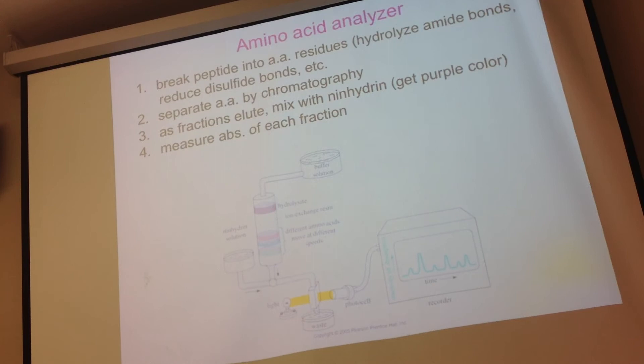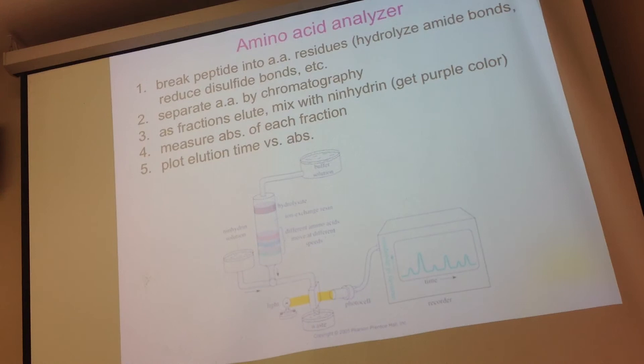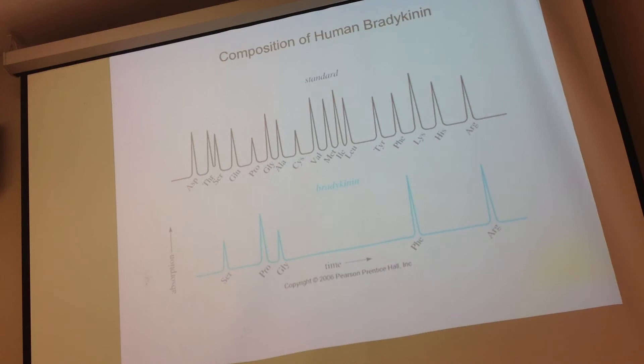Here's an example output with all these spikes. You inject standards alongside your unknown, and just like in the GC lab you match up retention times — there's serine, there's proline, there's lysine. The peak height tells you relative amounts — I can see I have about twice as much proline as lysine. But this only tells me which amino acids are present and roughly how many — it does not tell me the order in the chain, because I destroyed the chain to do this analysis.